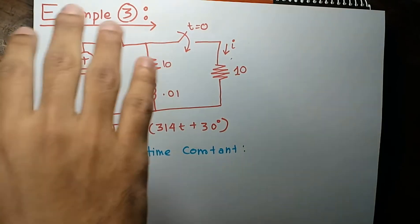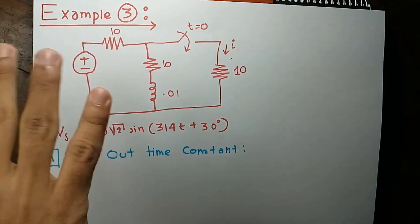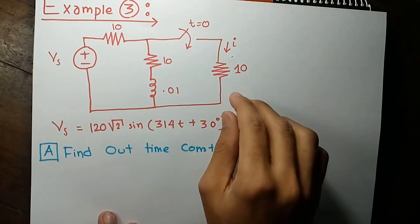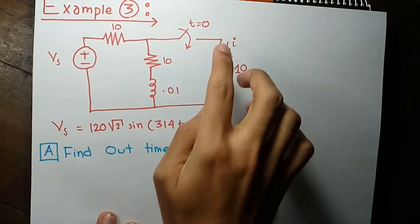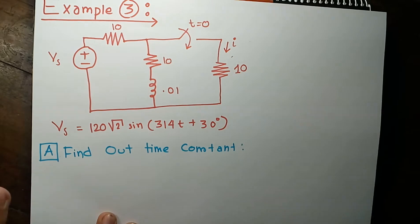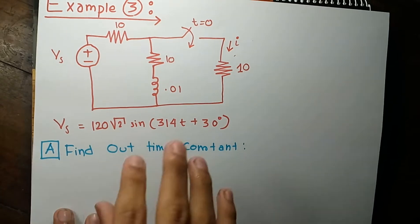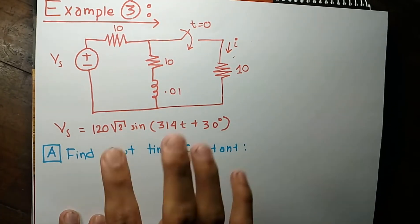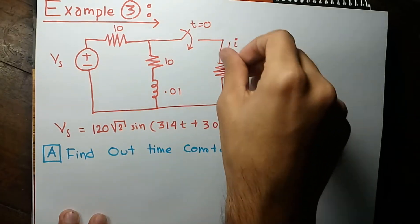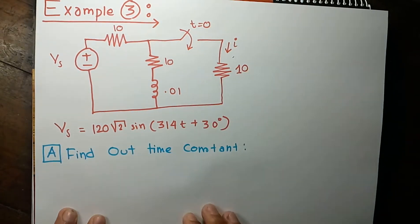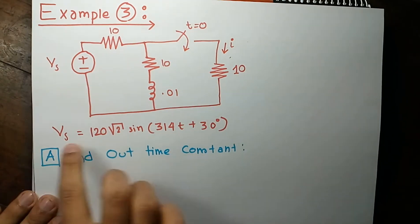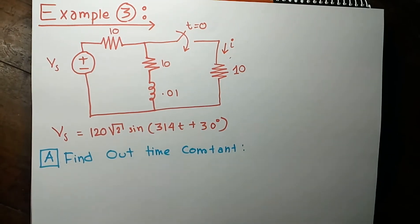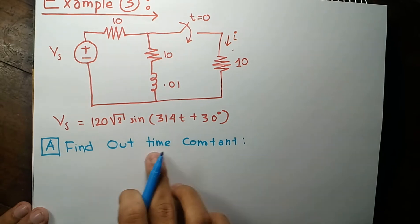This is example number three. In this example we are asked to find out the current through this resistance branch. In the past two examples our circuit was a simple series RL circuit, but in this example it is a much more complicated circuit. We are asked to find out the current through this branch, and the voltage source has this form. We will go through the working rule again.